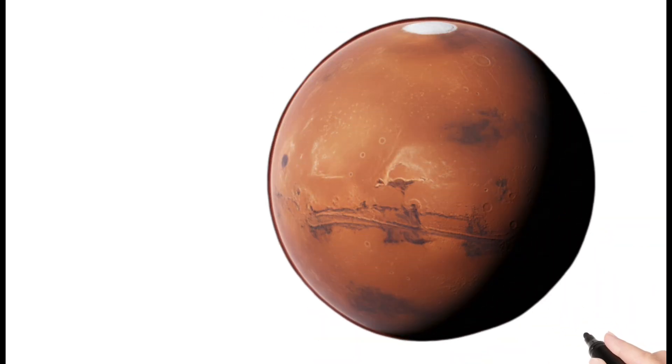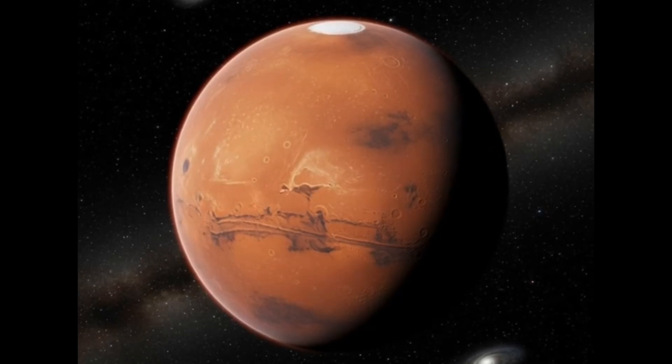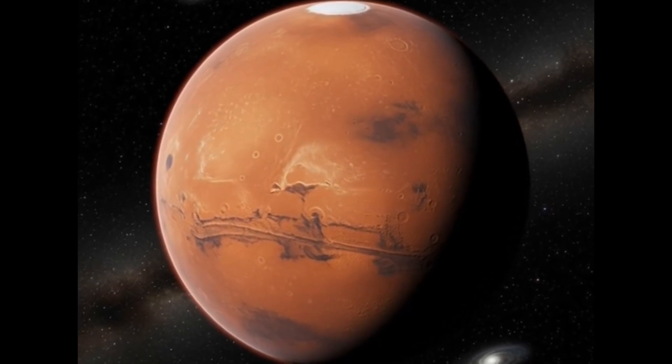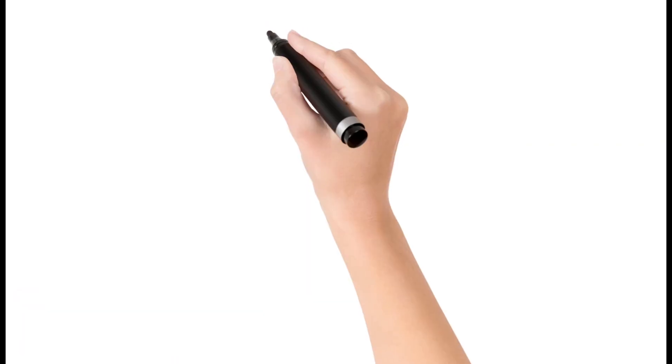Next, Mars. Mars is known as the Red Planet. It has the tallest volcano in the solar system. Scientists search for signs of life there. Mars has two small moons.